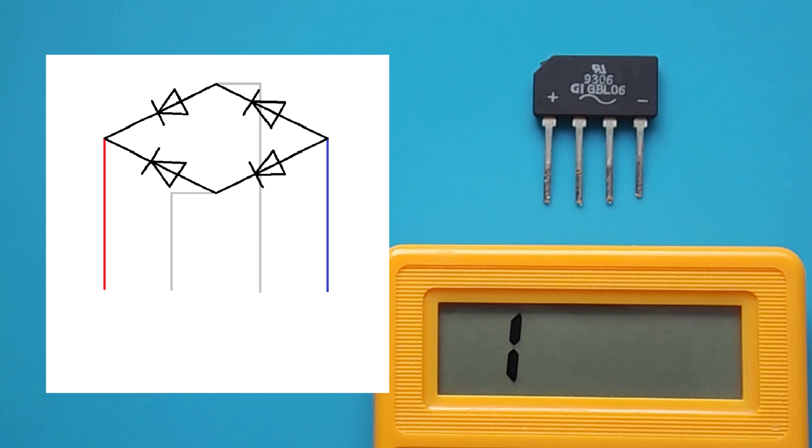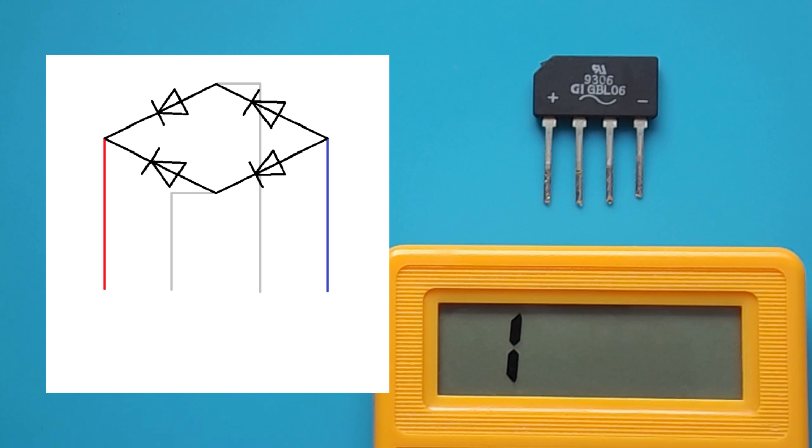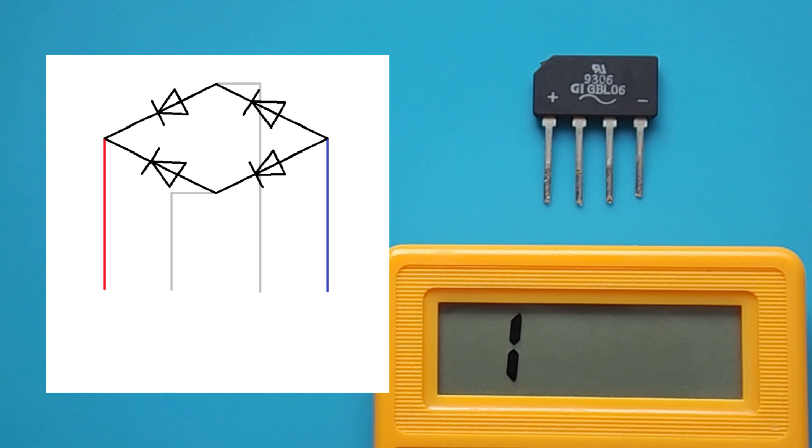Each diode bridge assembly has four pins. Two are used for AC input and two for plus and minus output. Usually all conclusions are signed. The AC input is marked with a tilde, and the outputs are naturally marked with plus and minus.